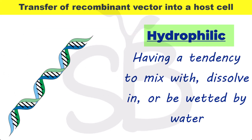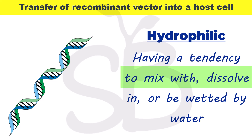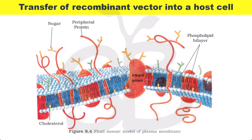DNA is a hydrophilic molecule. Hydrophilic means having a tendency to mix with or dissolve in water. Because the plasmid is hydrophilic and bacteria have a cell wall that is not hydrophilic — it is made of lipid bilayers — the cell wall does not easily allow the plasmid to pass through.